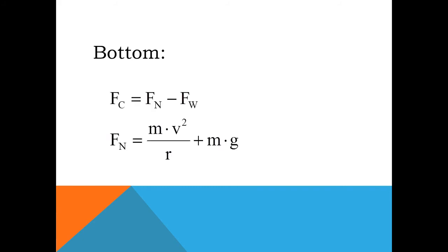And for the bottom, F_C equals F_N minus F_W. F_N is equal to mv squared over r plus mg.